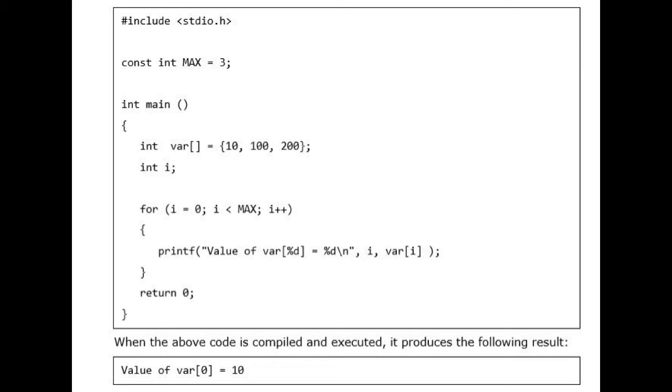for (i = 0; i < MAX; i++) { printf("Value of var[%d] = %d\n", i, var[i]); } return 0; }